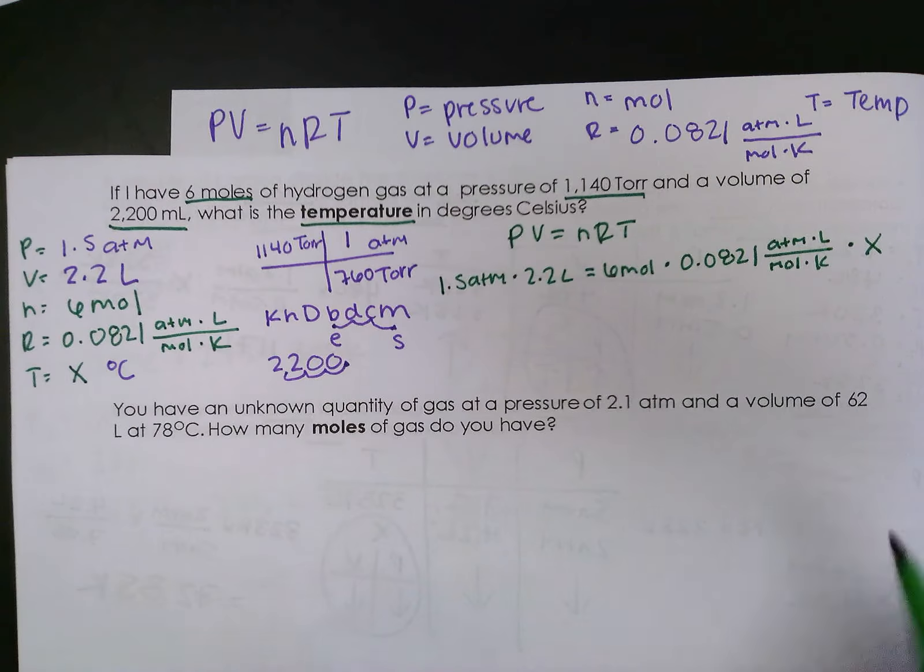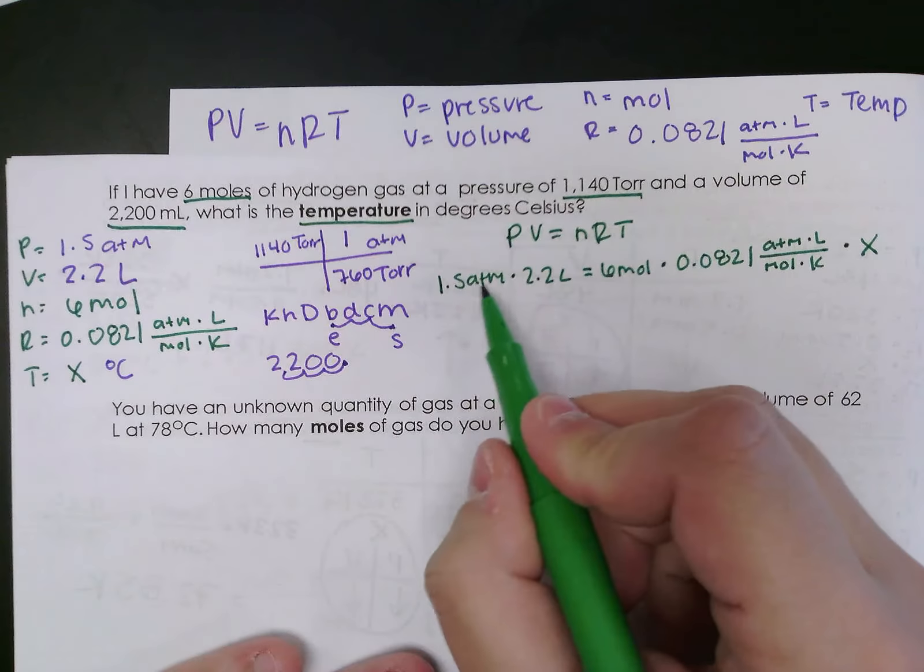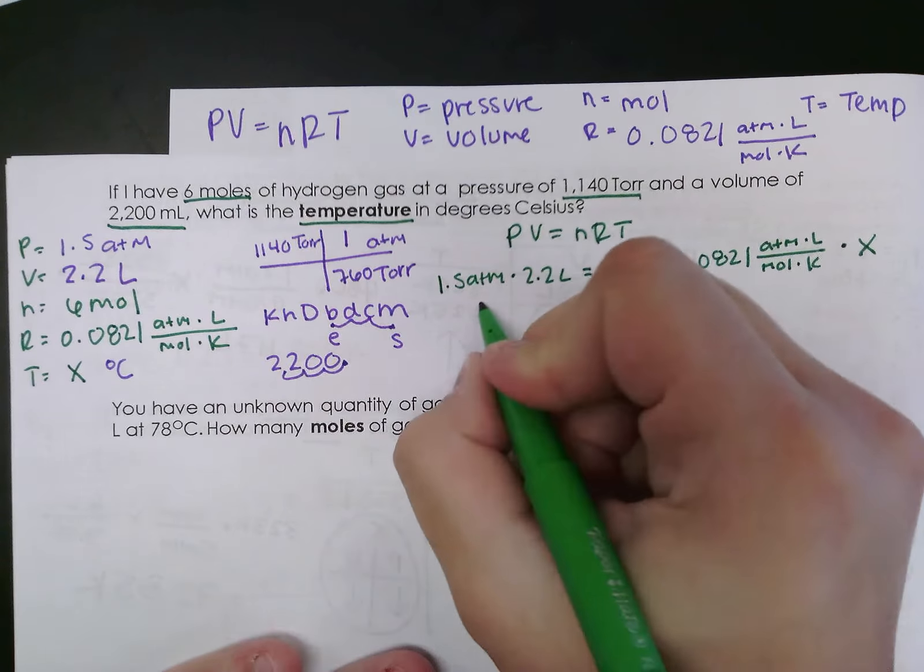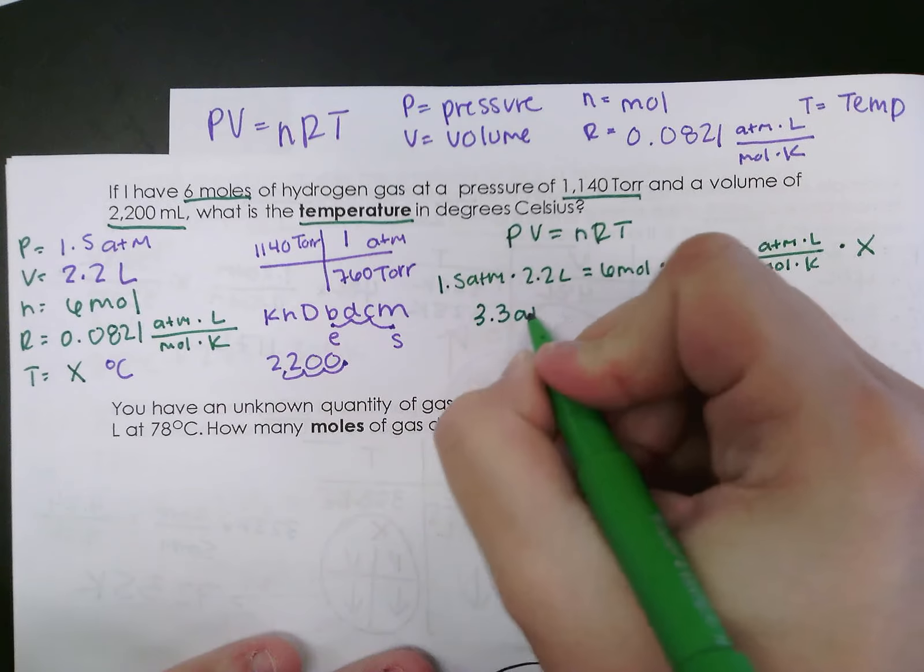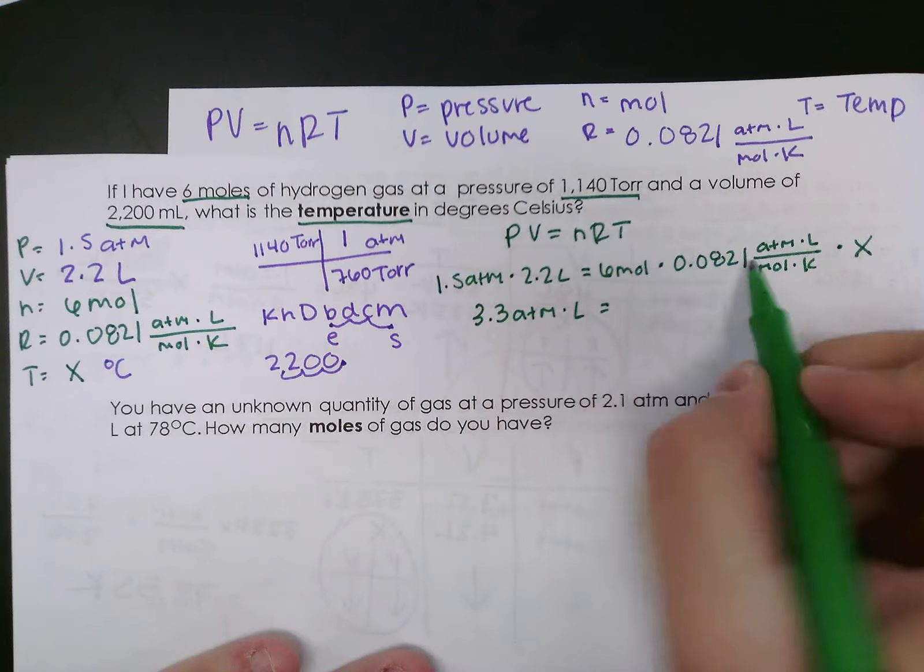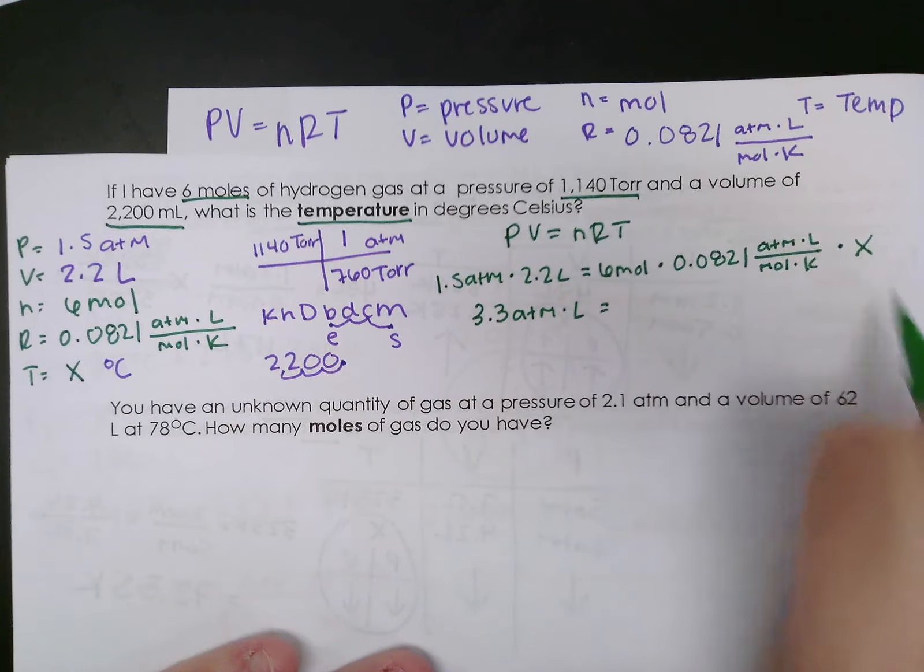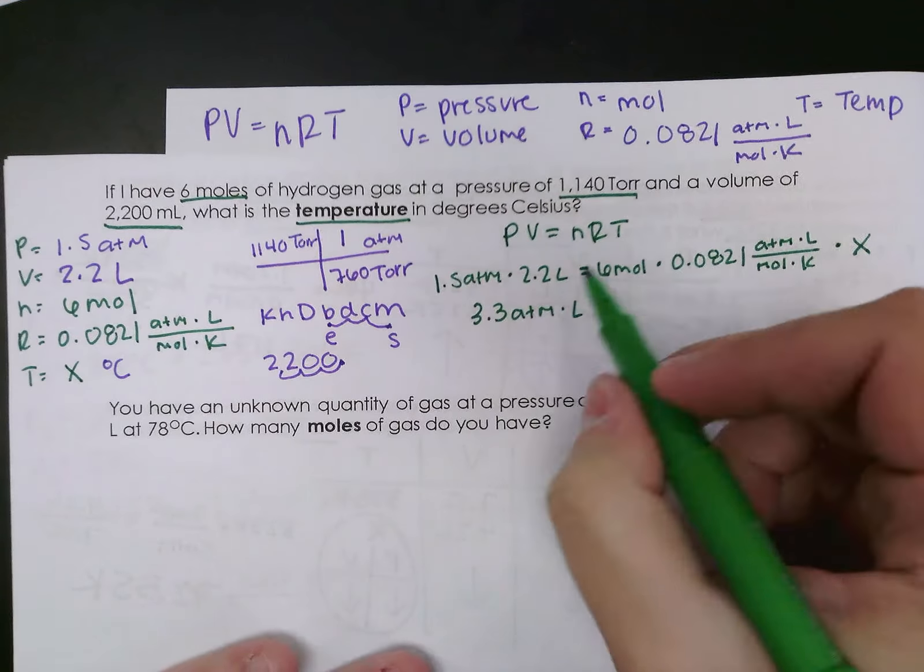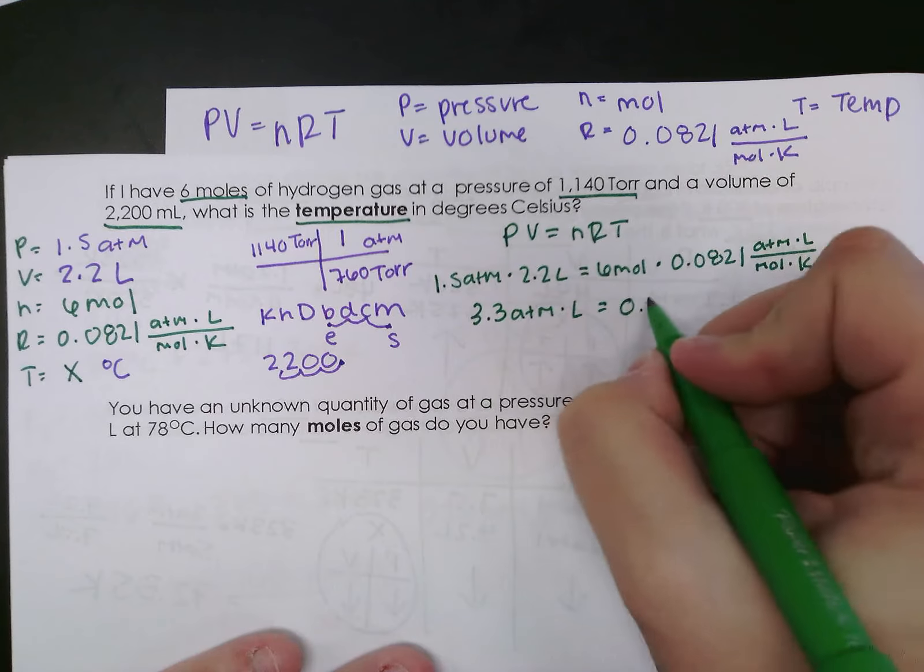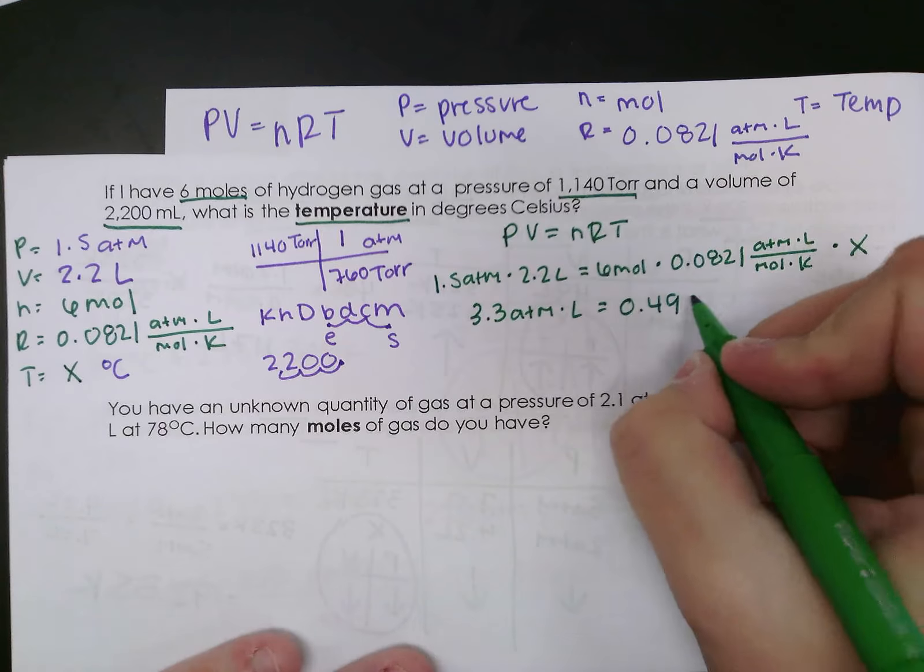Now it's just all algebra. So first I'm going to simplify this side by multiplying 1.5 times 2.2, and that gets me 3.3 atmospheres per liter. Then over here, I'm going to simplify these two numbers. I'm going to have to leave X because I've got to get it by itself. So when I multiply 6 moles times our gas law constant, I get 0.4926.